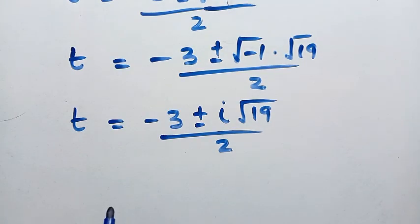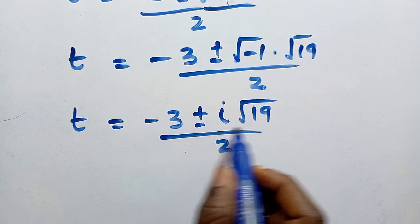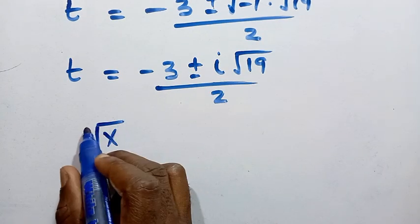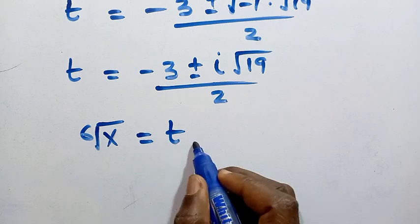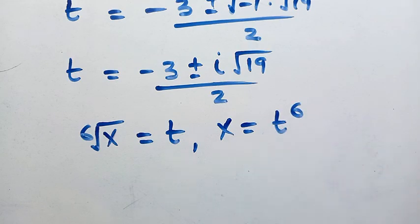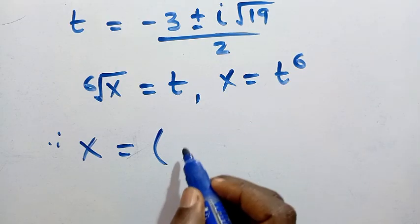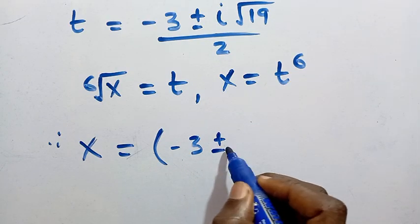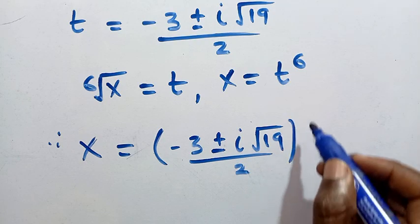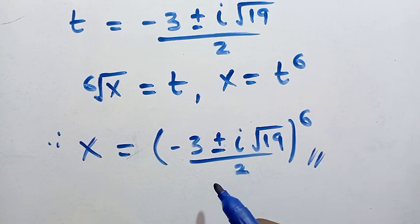These complex values of t come in two forms: minus 3 plus i root 19 over 2, and minus 3 minus i root 19 over 2. Recalling that x equals t to the power of 6, we substitute each complex t value and expand to the power of 6 to obtain the remaining complex solutions for x.